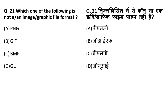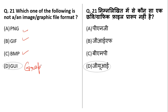Which of the following is not an image file format? PNG is an image file format, GIF is an image file format, and Bitmap is an image file format. But GUI stands for Graphical User Interface — it is not a file format.